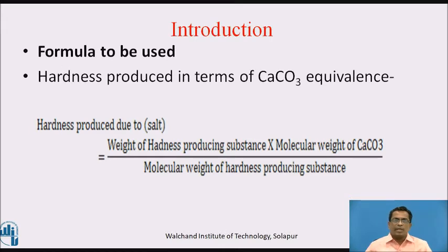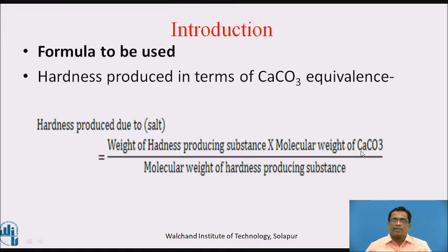To calculate total hardness of water, we calculate the hardness produced by each and every compound present in water. The formula used is: hardness produced due to a salt equals the weight of the hardness-producing substance multiplied by the molecular weight of calcium carbonate (always 100), divided by the molecular weight of the hardness-producing substance.